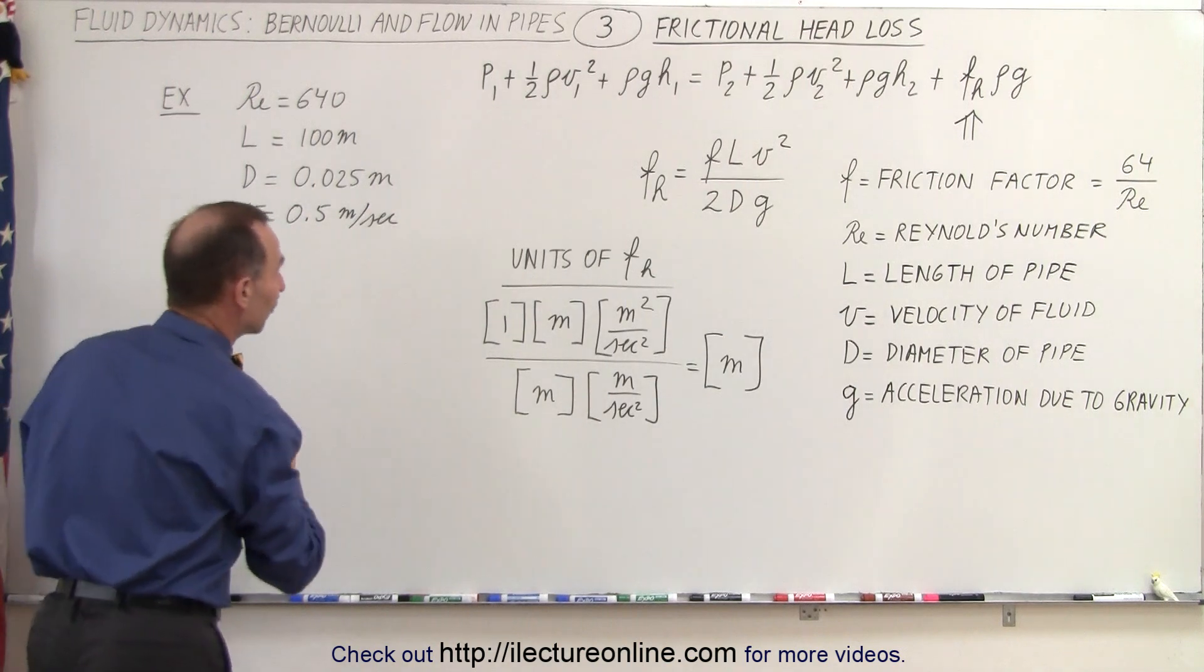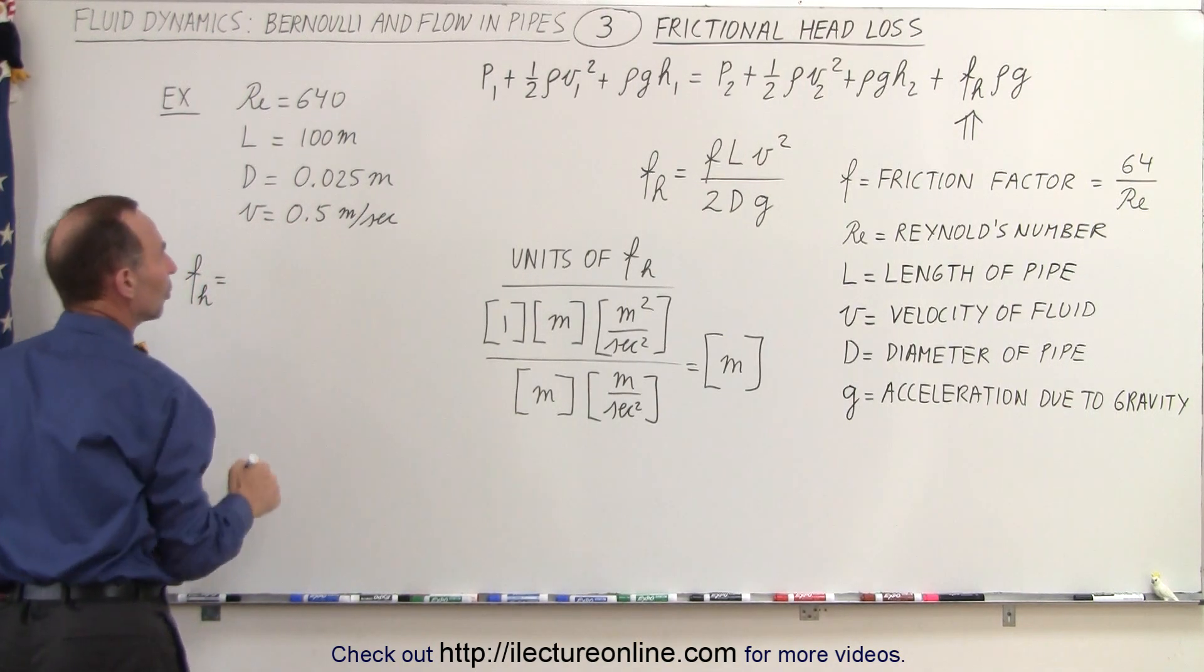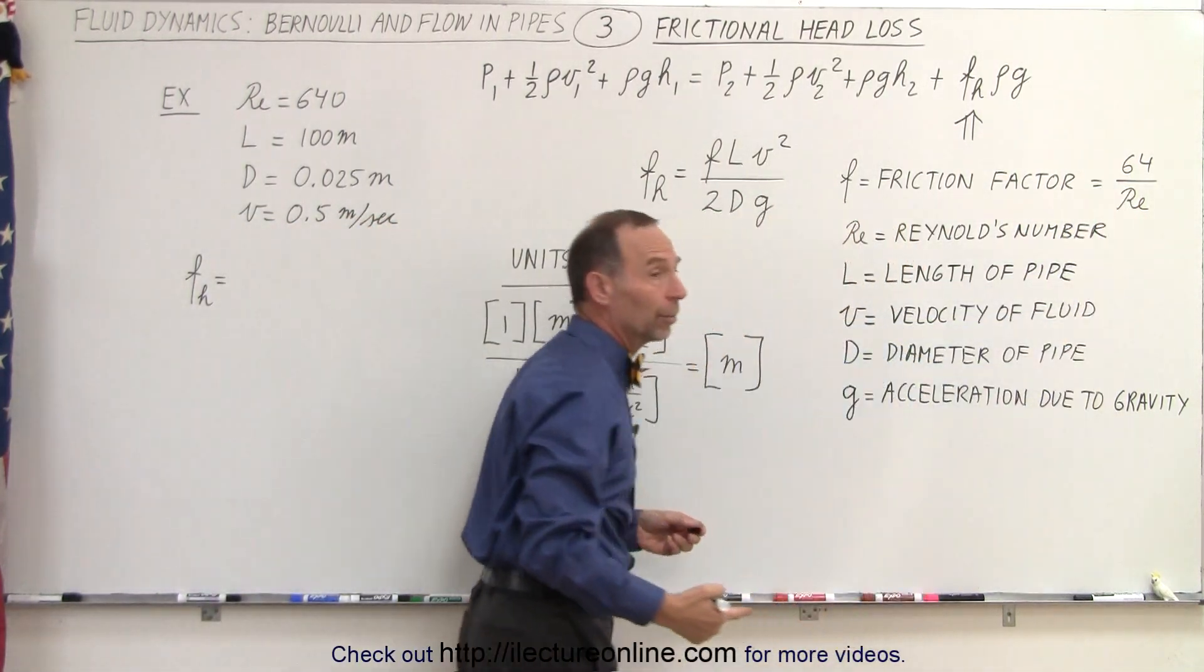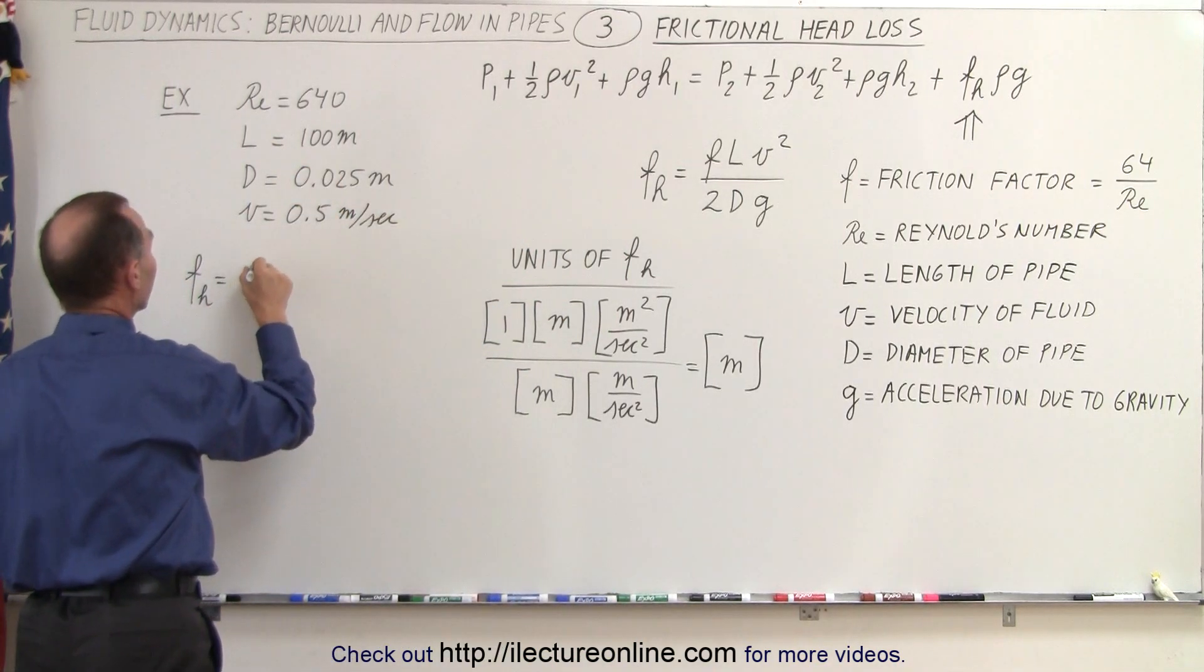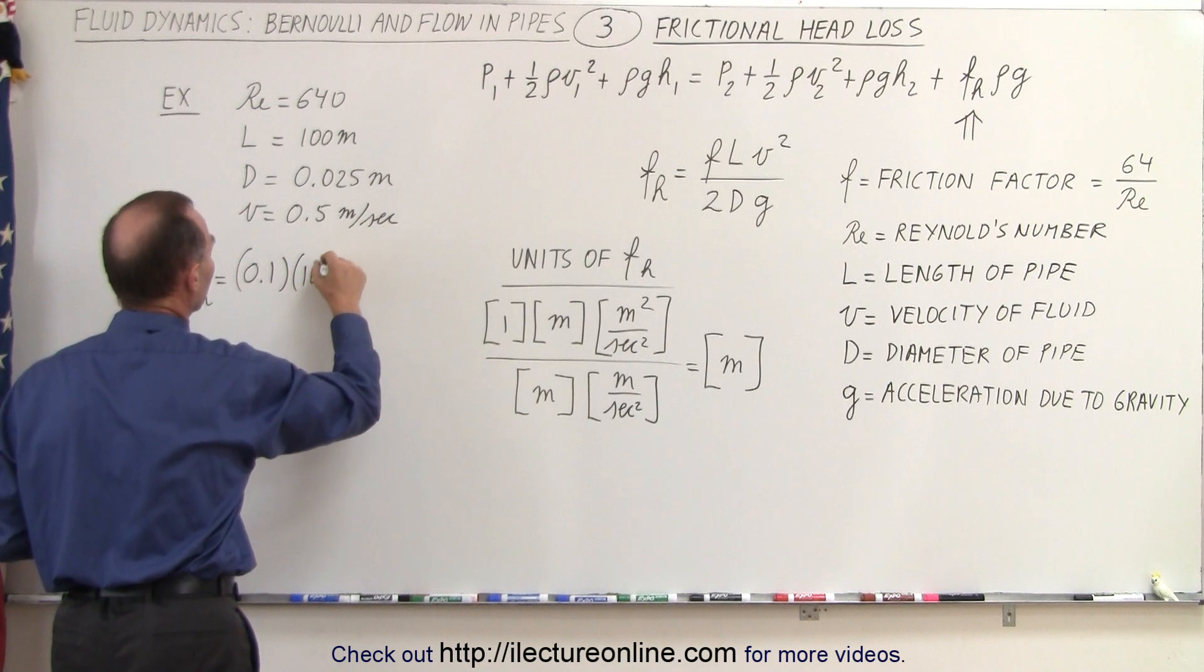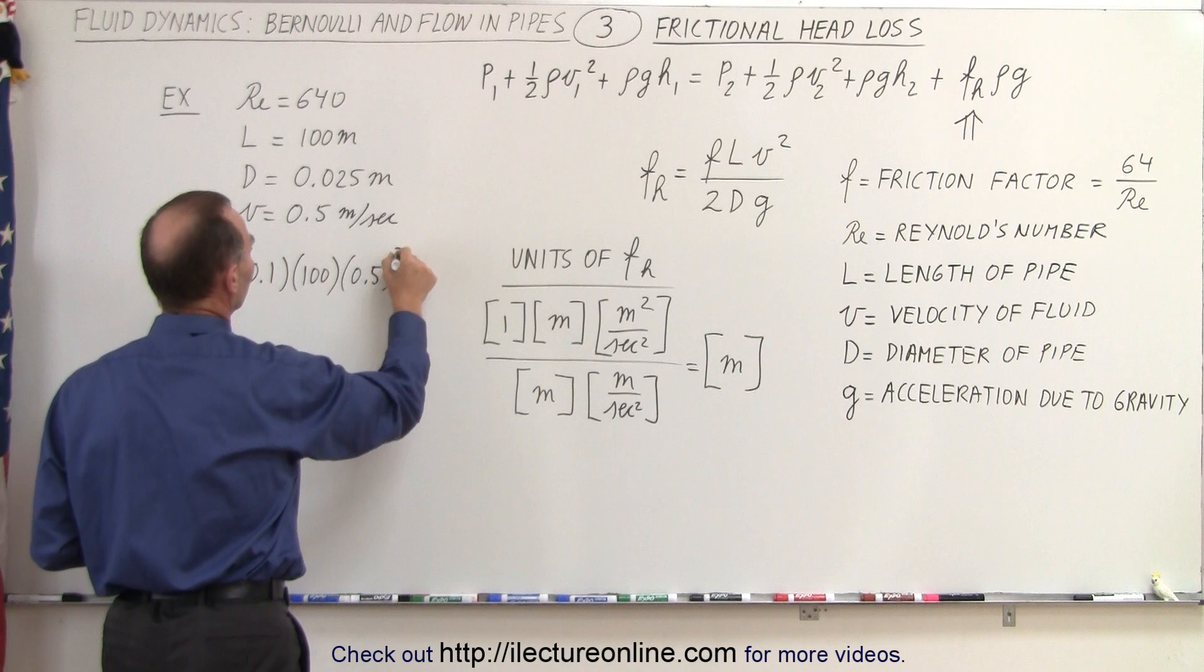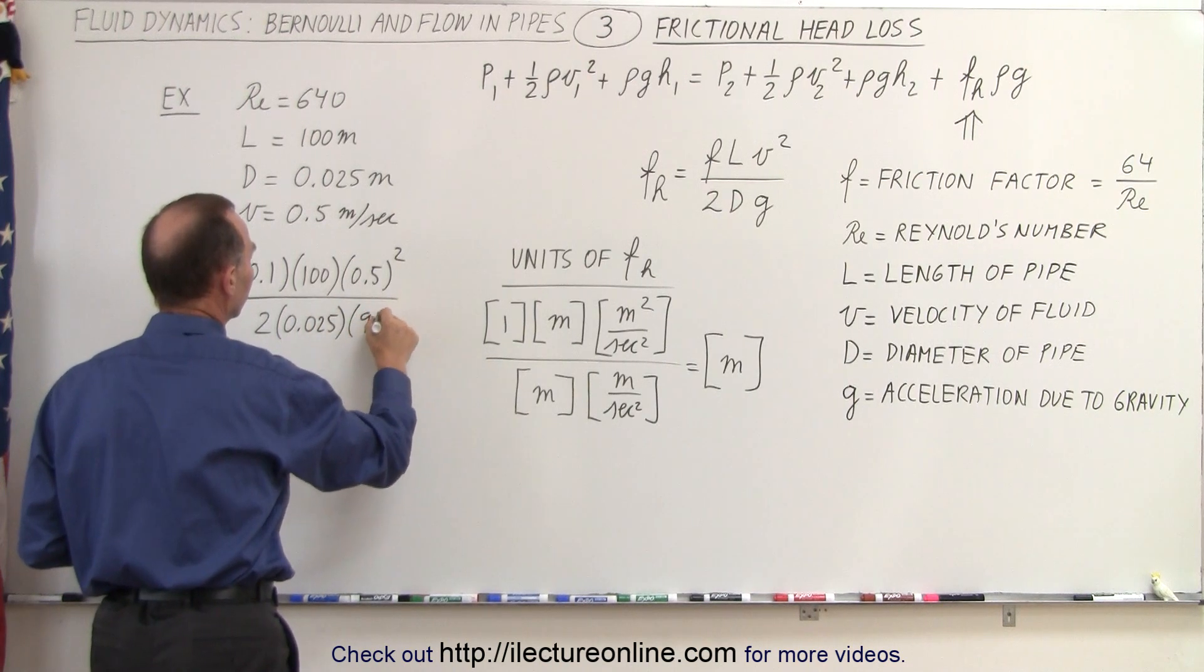Let's go ahead and calculate the frictional head loss. So fₕ is equal to, first of all, the friction factor, which is 64 divided by the Reynolds number. Now the Reynolds number is 640, so 64 divided by 640 would be one-tenth, or 0.1. We multiply that times the length of the pipe, which we said was 100 meters. The velocity squared, so that's 0.5 squared, divided by 2 times the diameter, which is 0.025, and the acceleration due to gravity is 9.8.